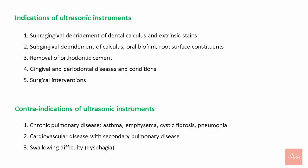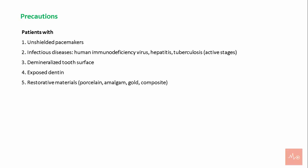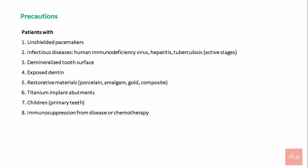Contraindications for ultrasonic scalers include chronic pulmonary diseases such as asthma, emphysema, cystic fibrosis, and pneumonia; cardiovascular diseases with secondary pulmonary disease; and patients with swallowing difficulty or dysphagia. Precautions apply to patients with unshielded pacemakers; infectious diseases like HIV, hepatitis, and tuberculosis; active demineralized root surface or exposed dentine; patients with restorative materials such as porcelain, amalgam, gold, or composite; titanium implant abutments; primary teeth in children; and patients on immunosuppression or with uncontrolled diabetes mellitus.